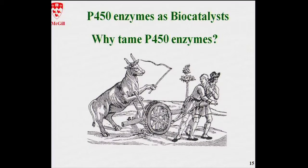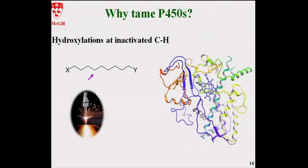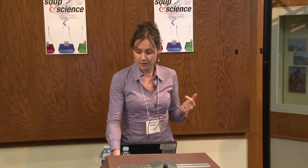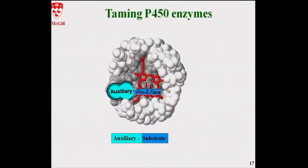Now I'm going to switch completely and talk about green chemistry. We're trying to use P450s as biocatalysts. These enzymes perform chemical reactions that are very hard for chemists to do — they hydroxylate at inactivated C-H bonds selectively, with no equivalent chemical reagent. However, they do so on the substrates they prefer and where they choose. We want to tame them to hydroxylate our substrates at positions we specify. We envision using what we call a chemical auxiliary — a molecule tagged onto your substrate that controls binding to the enzyme, forcing it to hydroxylate at a specific position.